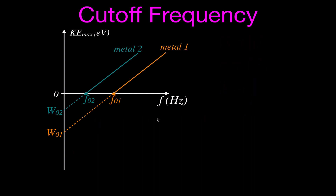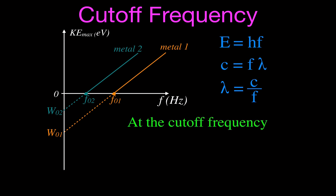Planck's constant is 6.63 times 10 to the minus 34. To summarize: as we go across the graph, we increase the energy because we're increasing the frequency, and we decrease the wavelength since wavelength and frequency are inversely proportional. At the cutoff frequency, we basically have the work function. The cutoff frequency is measured in hertz; the work function is energy, usually in electron volts. If you multiply h times f, you get energy in joules — same thing as the work function, just different units.